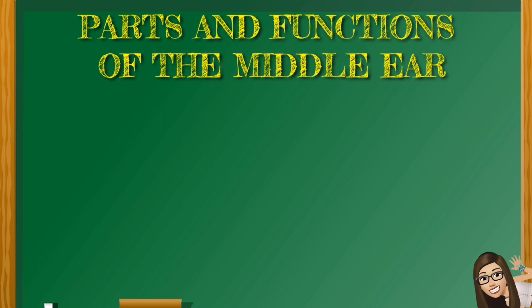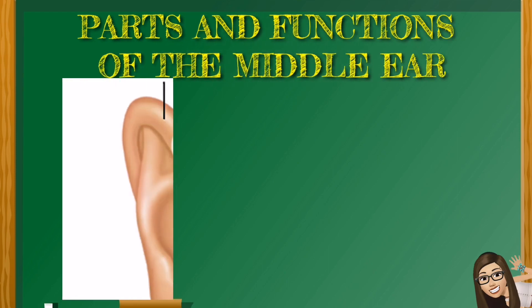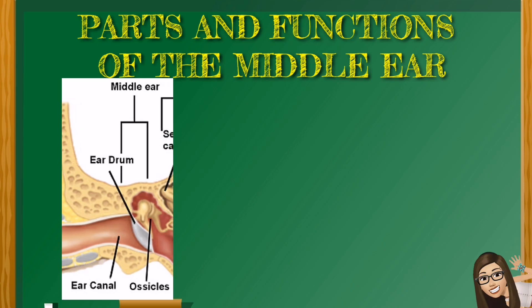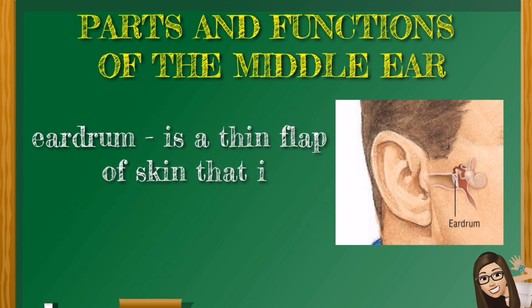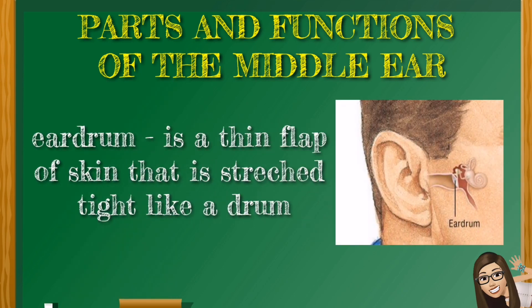Parts and functions of the middle ear: The middle ear includes the eardrum and the three tiny bones, or ossicles. The ossicles are the hammer, anvil, and stirrup. The eardrum is a thin flap of skin that is stretched tight like a drum. It vibrates as it receives the sound waves.